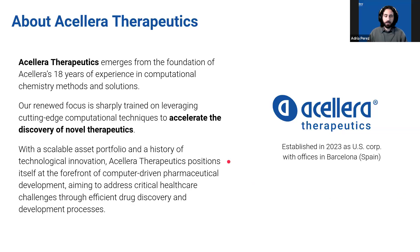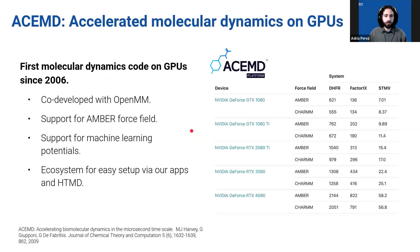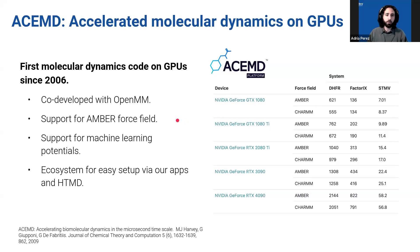Focusing on MD simulations, Accelera has been related with MD since the company started with HTMD, the first molecular dynamics code that operated on GPUs in 2009. The software has evolved over the years; the current version, HTMD3, was co-developed with OpenMM and supports all common force fields. We're also starting to support machine learning potentials, which we'll talk about later. Currently HTMD is not just a simulation engine but a whole platform allowing you to prepare, build, and parameterize ligands, and also analyze trajectories.